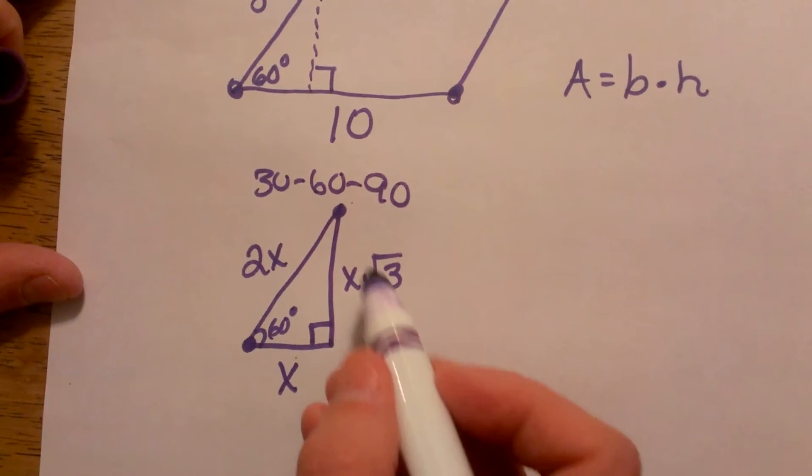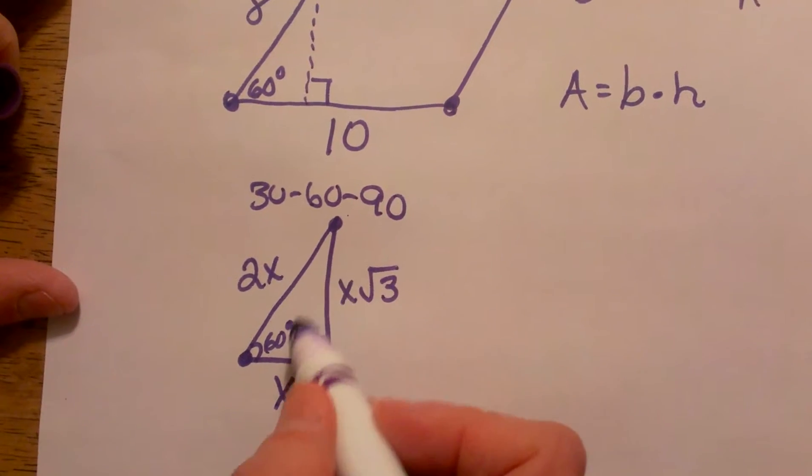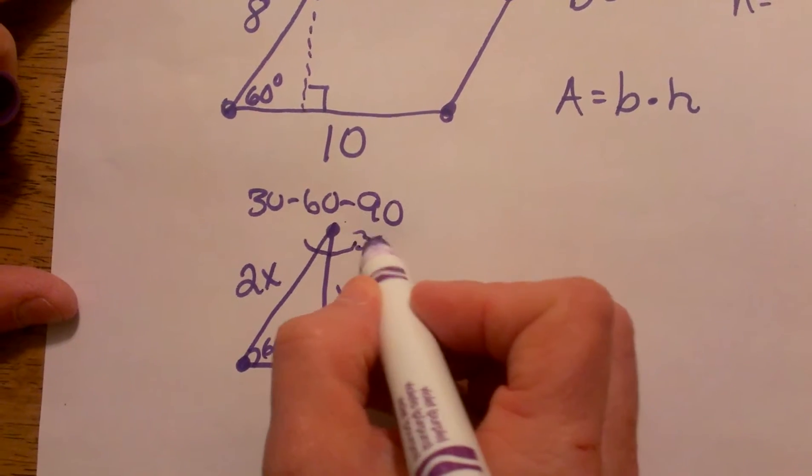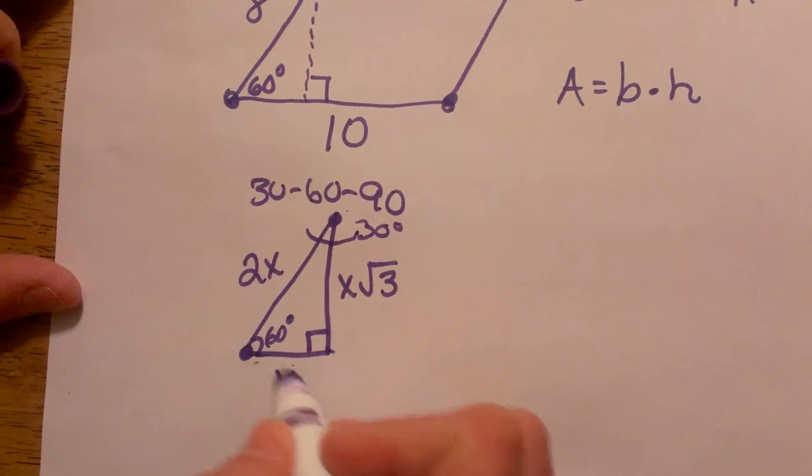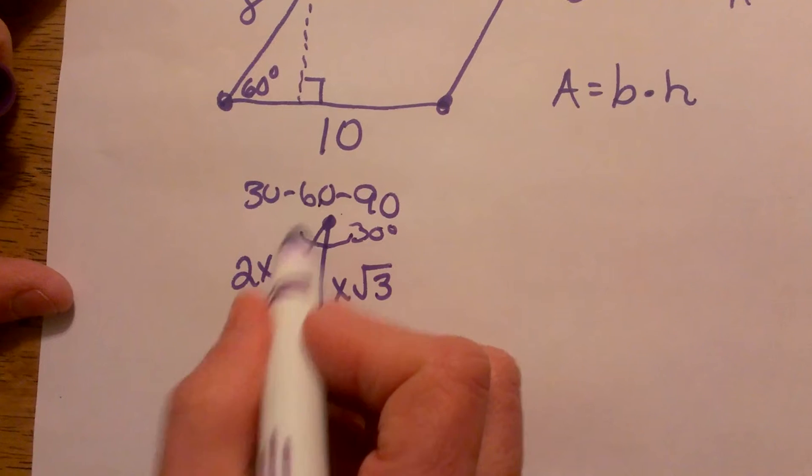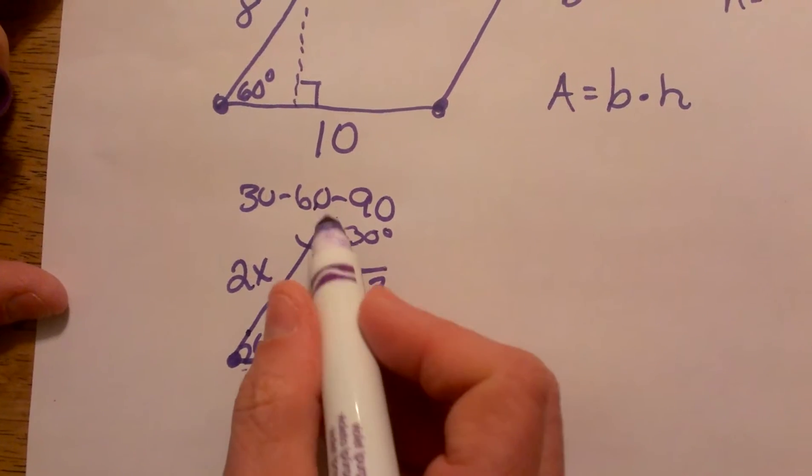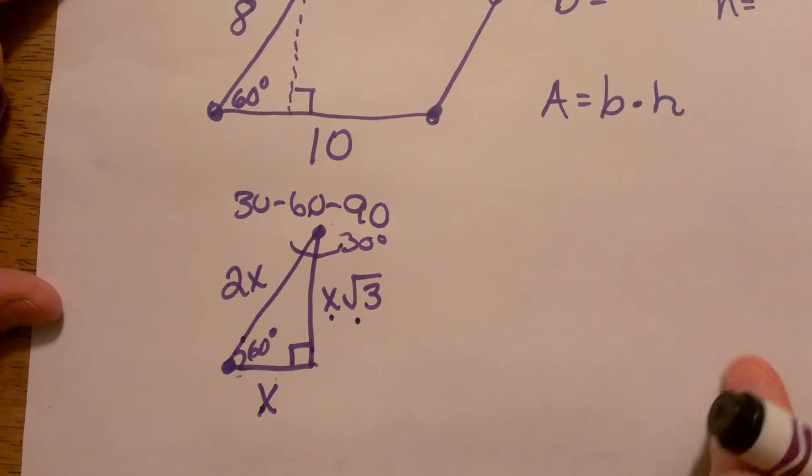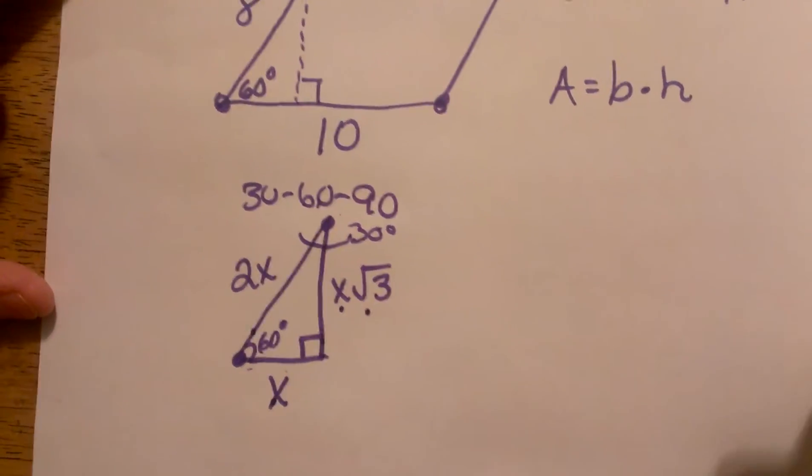In a 30-60-90 right triangle, the short leg is opposite the 30 degree angle. So I'm going to call the opposite side x. My hypotenuse is 2x and my long leg is x times the square root of 3. Now I'll figure out what I have.